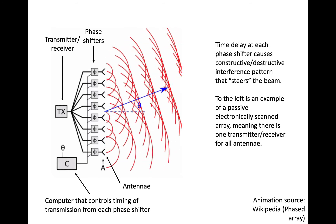All of the antennas are linked to the same transmitter and receiver, which is the box labeled TX, but each antenna is controlled by a different phase shifter that controls the phase of the emitted wave so as to also contribute to the propagation direction of the combined transmitted waveform.